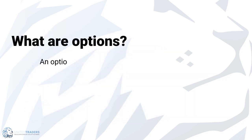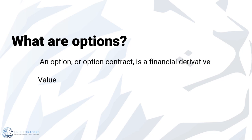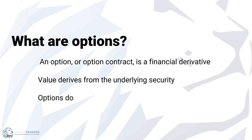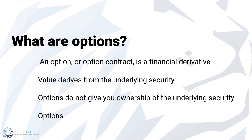Concepts of Options. An option, or options contract, is a financial derivative, which means its value derives from the underlying security. Unlike buying shares, options do not give you ownership of the underlying security. Options trading is a zero-sum game, as each option contract has a winner and a loser, or break-even.